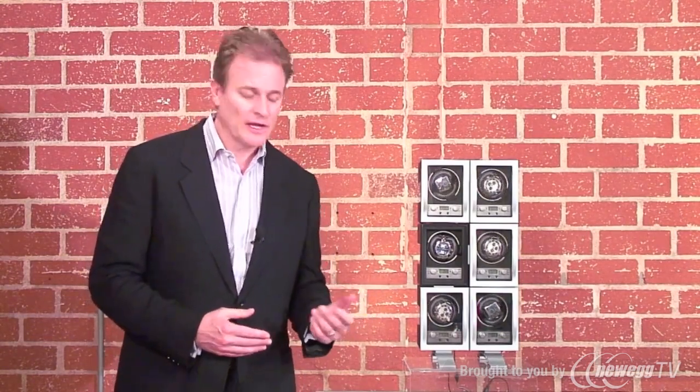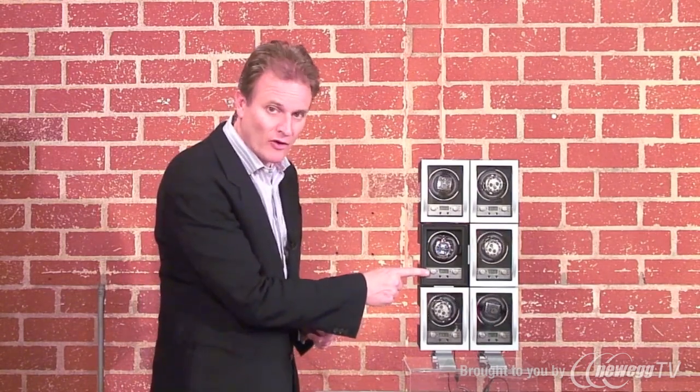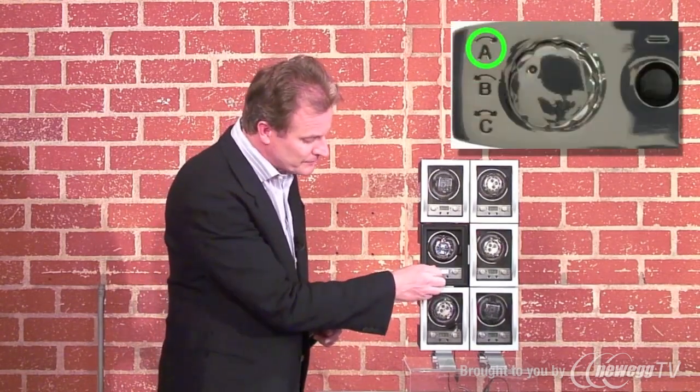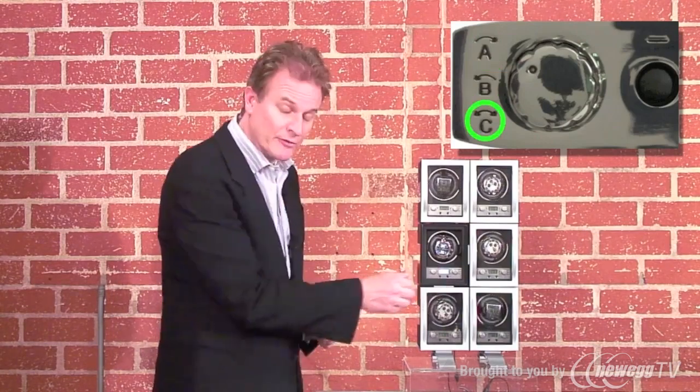Now that you've selected turns per day, you want to select the direction with which the watch turns. And there are three settings that are controlled by the left hand knob here. Clockwise, anti-clockwise, and bi-directional.